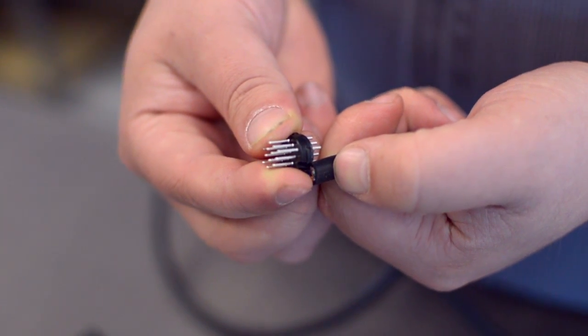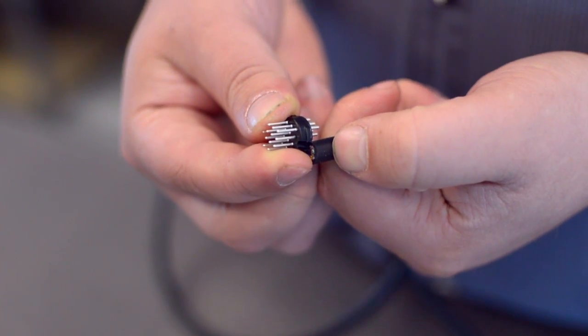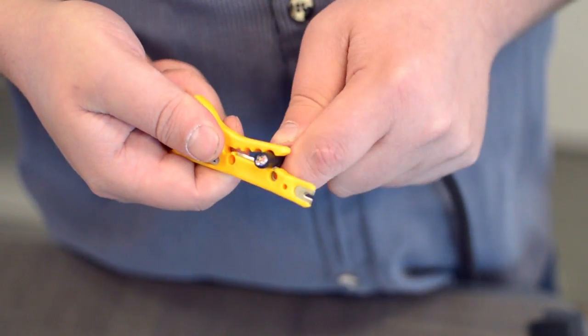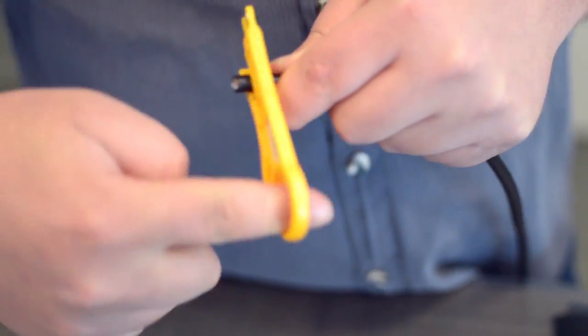Measure how far you will need to strip back the jacket by holding the cable up against the base of the connector. Then strip the cable jacket using the wire strippers.